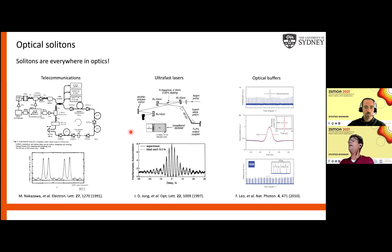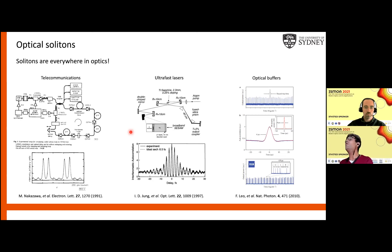Solitons perhaps are not as esoteric as you might think. They appear in a lot of different places in optics — for example, telecommunications, ultra-fast lasers, and frequency combs. The ultra-short pulse in a laser has an envelope that corresponds to a soliton.